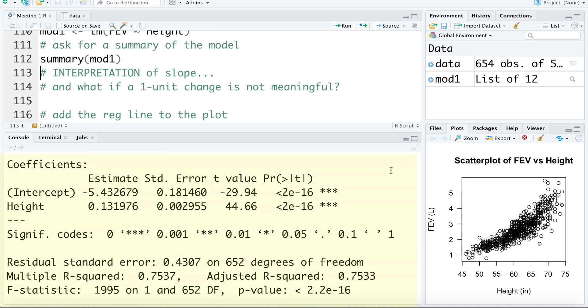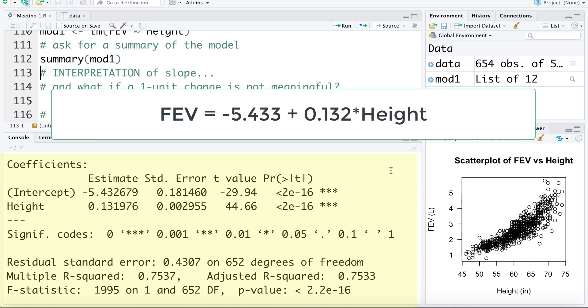We can see here that the fitted regression model is FEV equals negative 5.43 plus 0.13 times height. The model's intercept is negative 5.43, the model slope is 0.13.